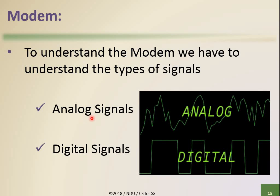Humans produce analog signals. Analog signal is also good for longer distance transmission - if we want to travel our signal over longer distances, we prefer analog signal. At the receiving end, we convert the analog signal into a digital signal, because all computing devices work on a digital level. So a modem is a device which performs this conversion from analog signal to digital signal.